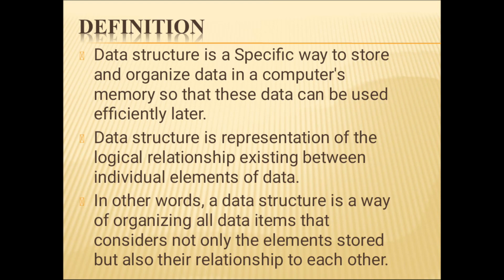Composite data is different from atomic data in that its components together maintain meaning. Data types are nothing but declarations of variable types — they are already seen in C programming language, and the same data types are used in data structure.